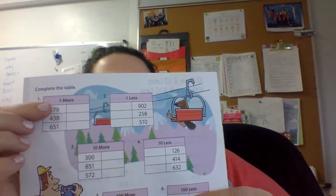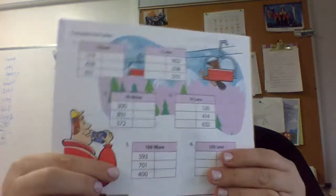100 more, 100 less. Then here on the back, you've got one more, one less, 10 more, 10 less, 100 more, 100 less.